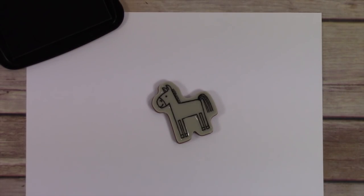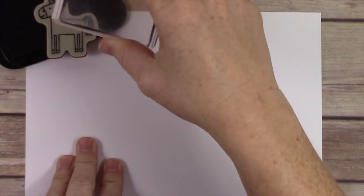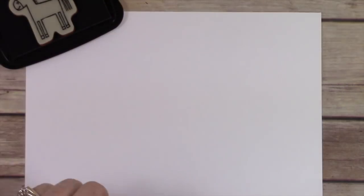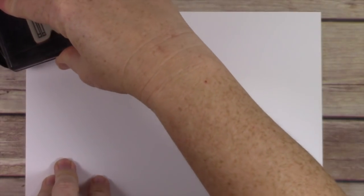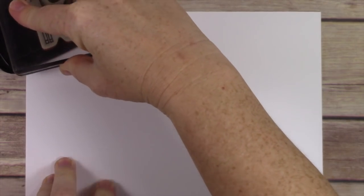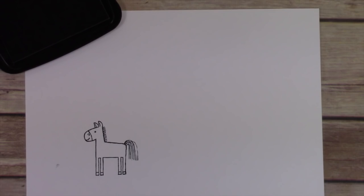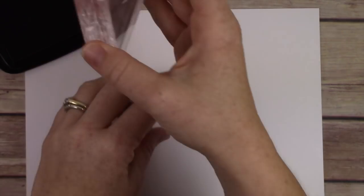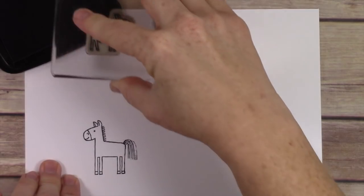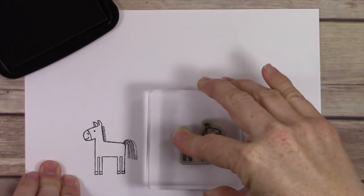I'm gonna take the Barnyard Babies stamp set and stamp every animal in the stamp set in Memento Tuxedo Black ink all over this piece of Crafter's Companion cardstock.